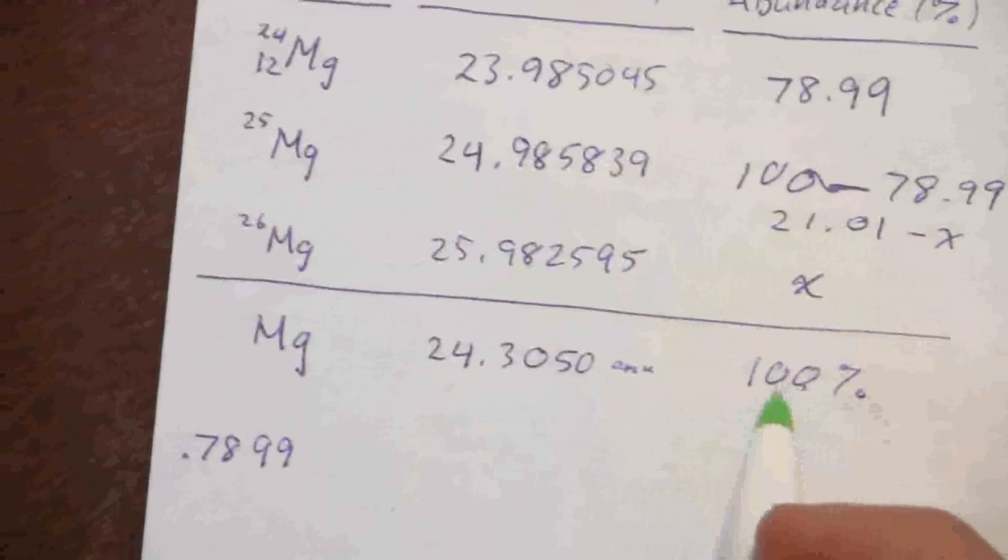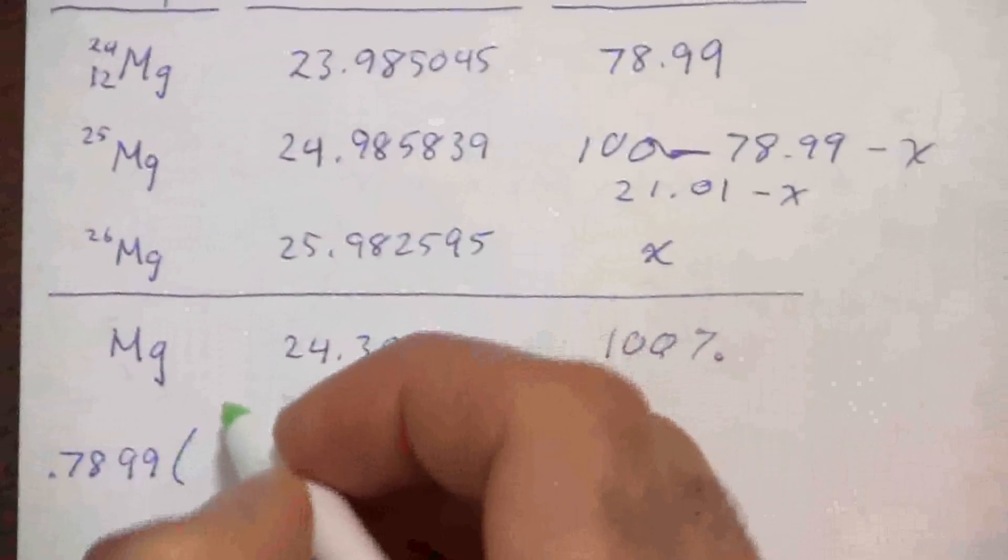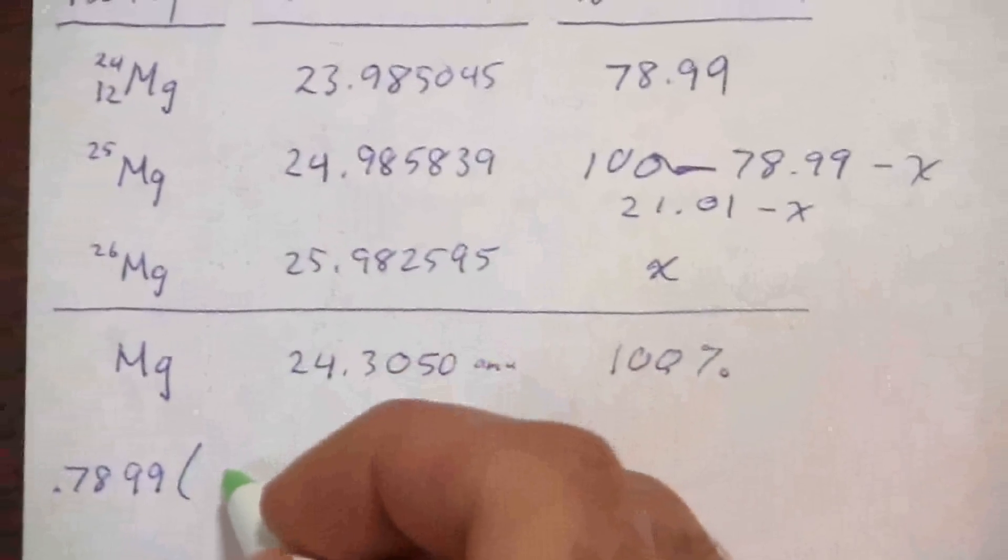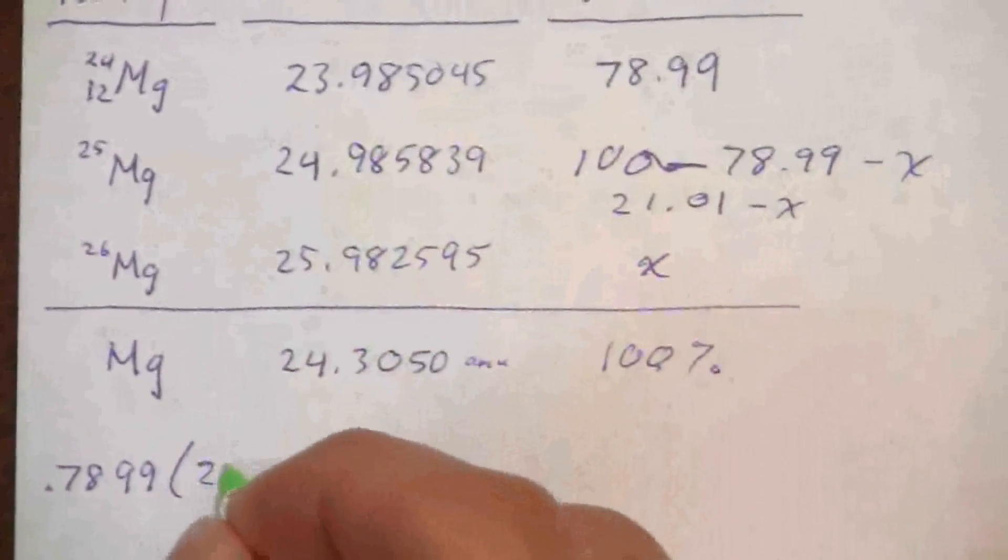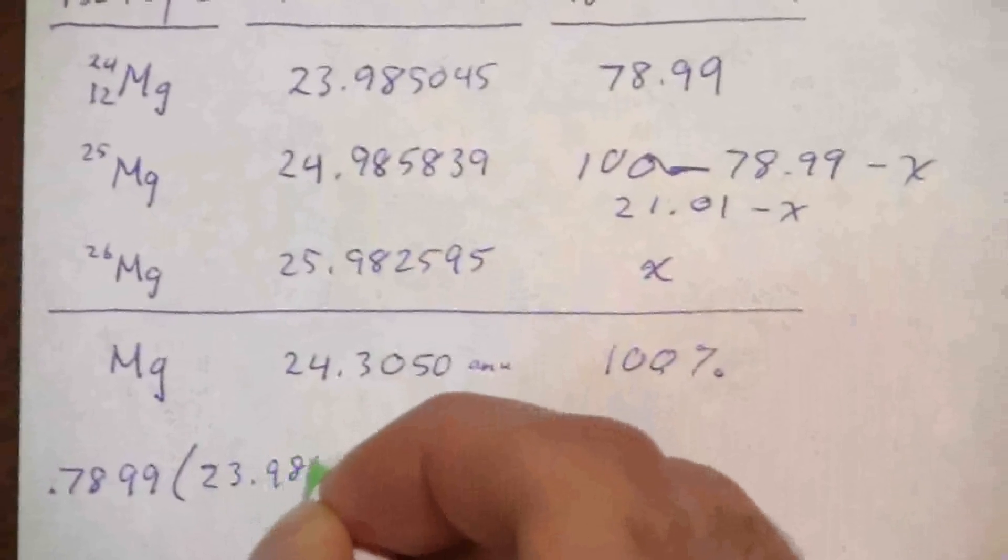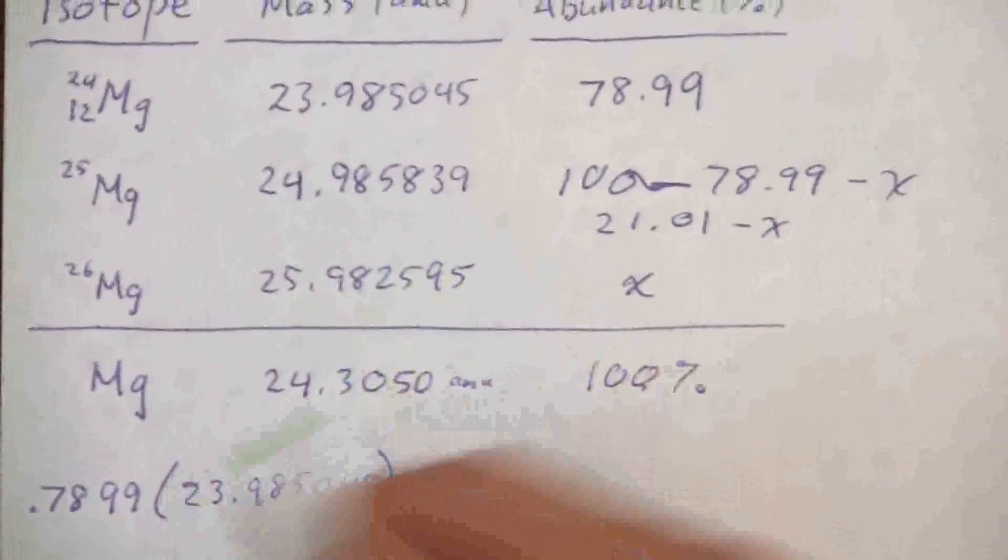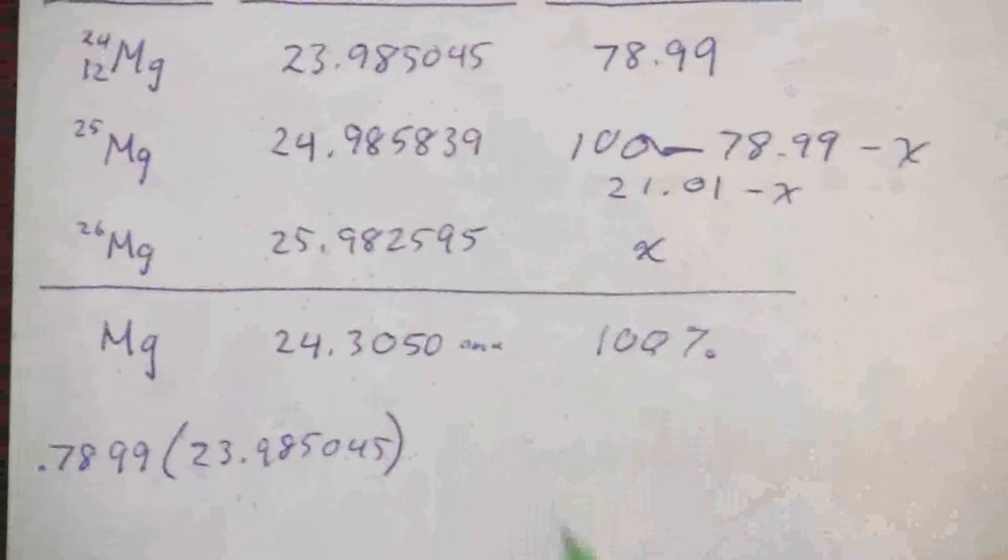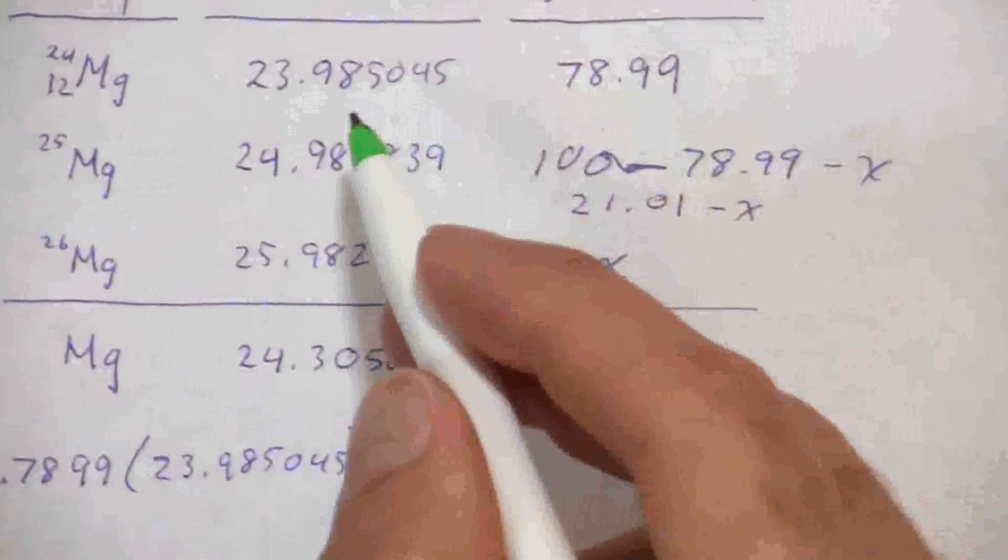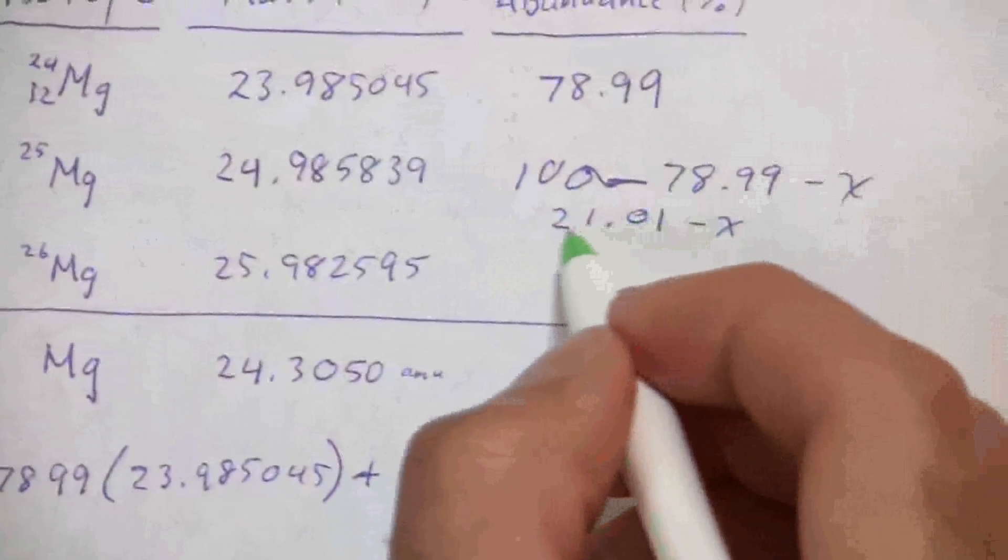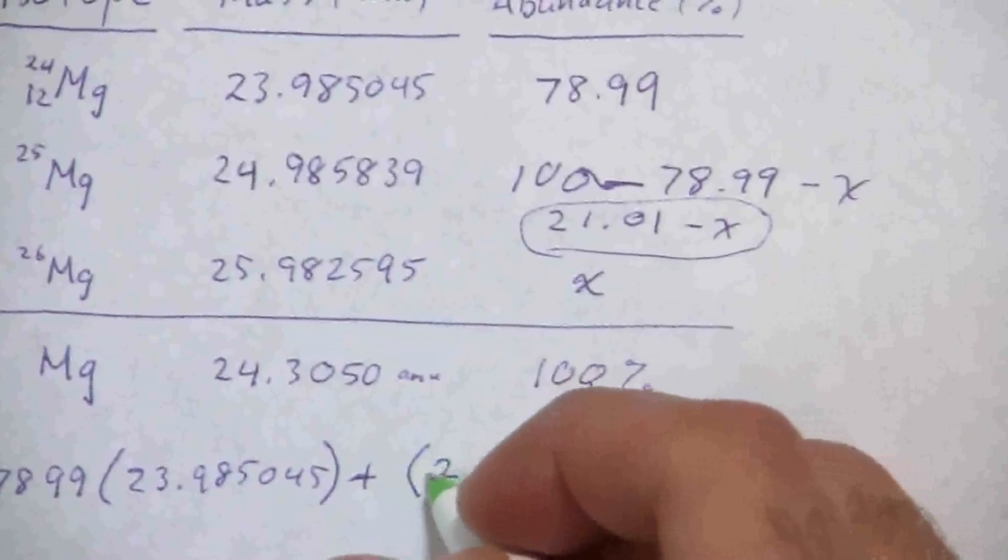So 0.7899 times 23.985045, and yes, these are all in AMU. I'm not going to write it, just because I know they're all AMU. So that's the first one, and then the second one, here is my weight. So I'm putting this in as 0.2101 minus x, and so x is going to be in the fractional form, as in it's a decimal, not a percent.